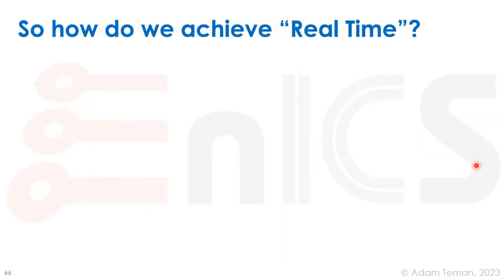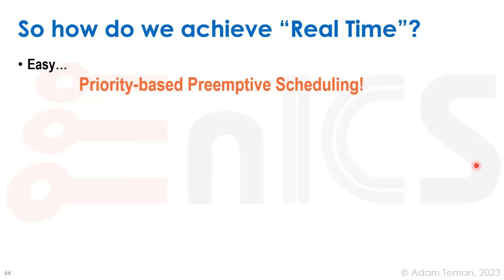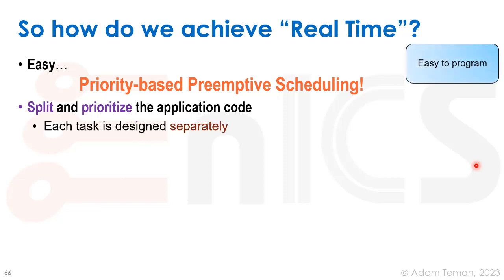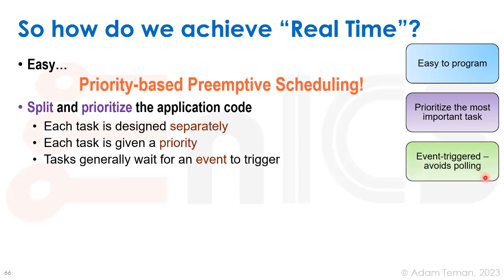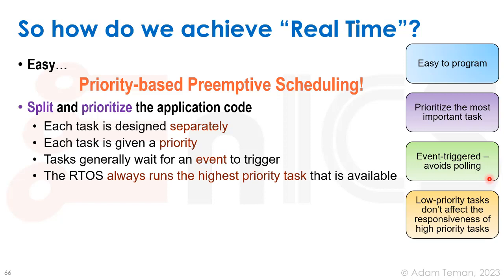So how do we achieve real-time? The answer is priority-based preemptive scheduling. We split and prioritize application code, designing each task separately — which makes programming easier compared to a complex super loop. We give each task a priority so the most important task is handled first. Tasks are usually event-triggered, meaning we wait for an event before executing, which avoids wasteful polling. The RTOS always runs the highest priority ready task, so lower priority tasks don't affect the responsiveness of high-priority ones.